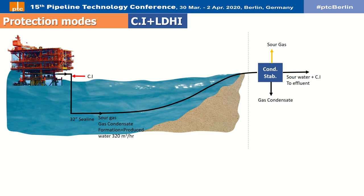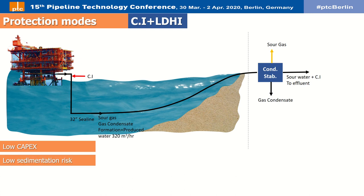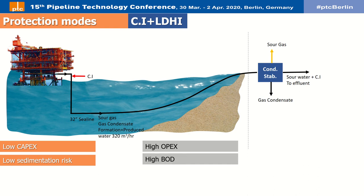Chemical interactions with other substances are also important for inhibitor efficiency. While all researchers were focused on flow, this important parameter has been neglected. Briefly, this method requires lower capital investment and has lower sedimentation risk, but it has much higher operating expenditures and higher biochemical oxygen demand, making it an environmental hazard.